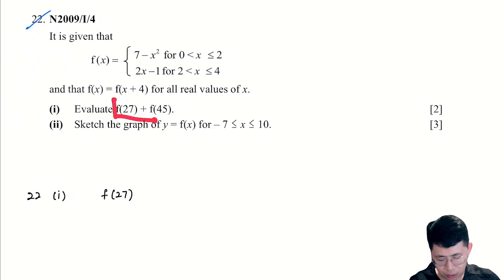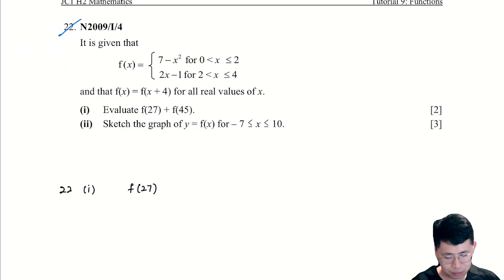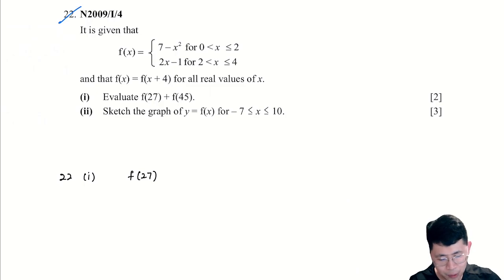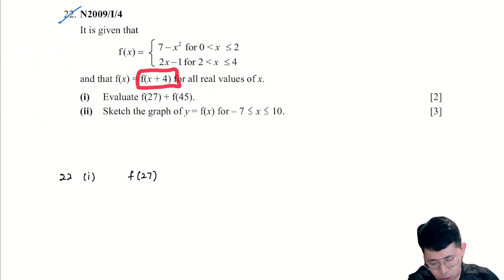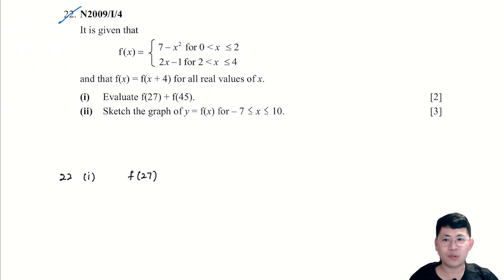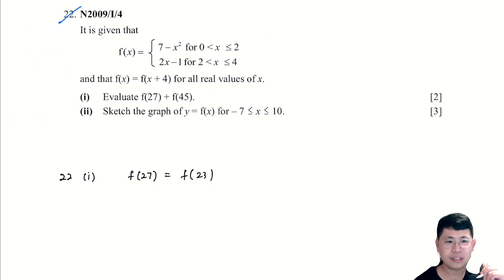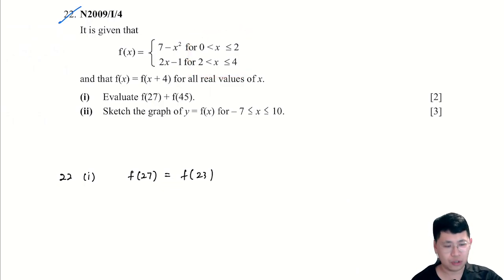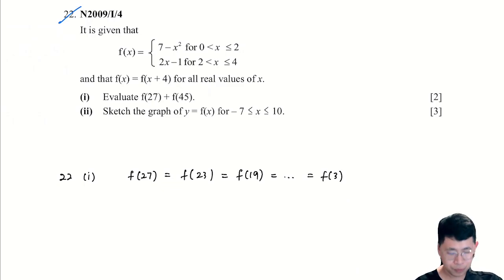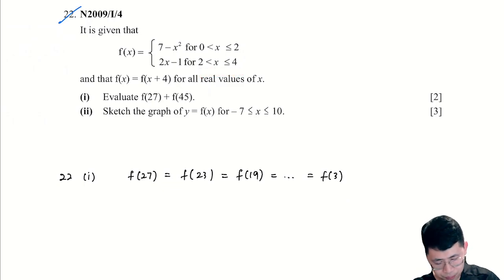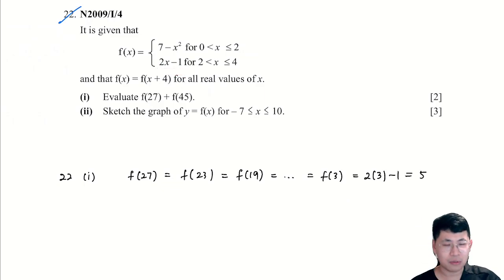We are going to evaluate f(27) + f(45). For f(27), since 27 is outside the range 0 to 4, we can link it up using the periodic formula. So 27 = 23 + 4, meaning f(27) = f(23). We keep subtracting 4 — 23, 19 — all the way until we get f(3). Since 3 falls in the range 2 to 4, we substitute into 2x − 1, giving us 5.